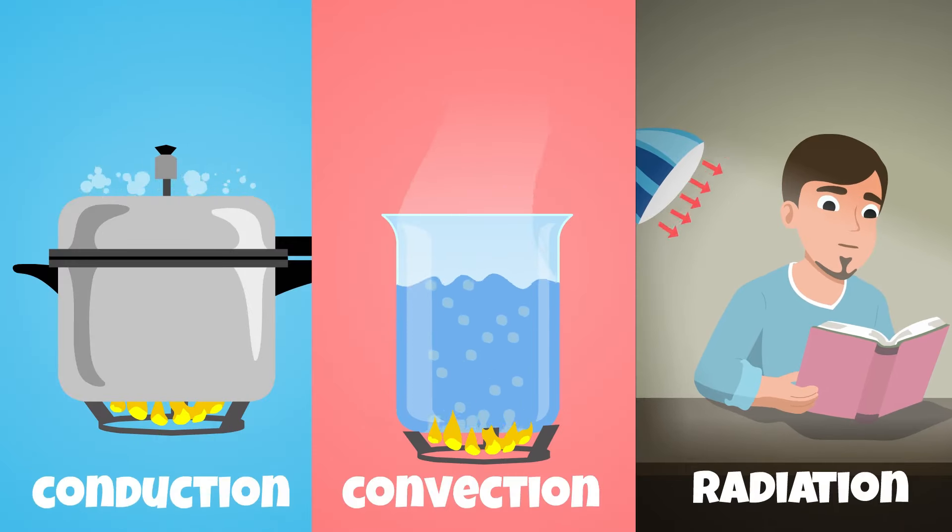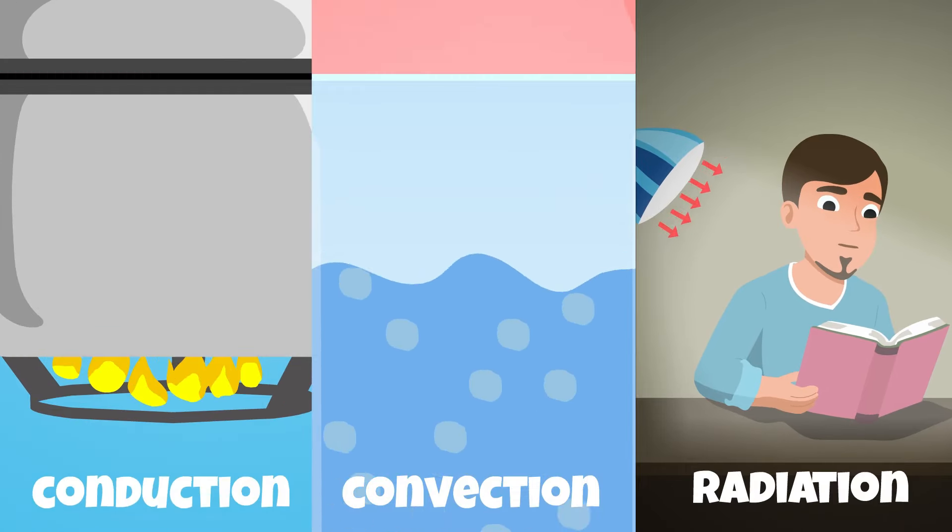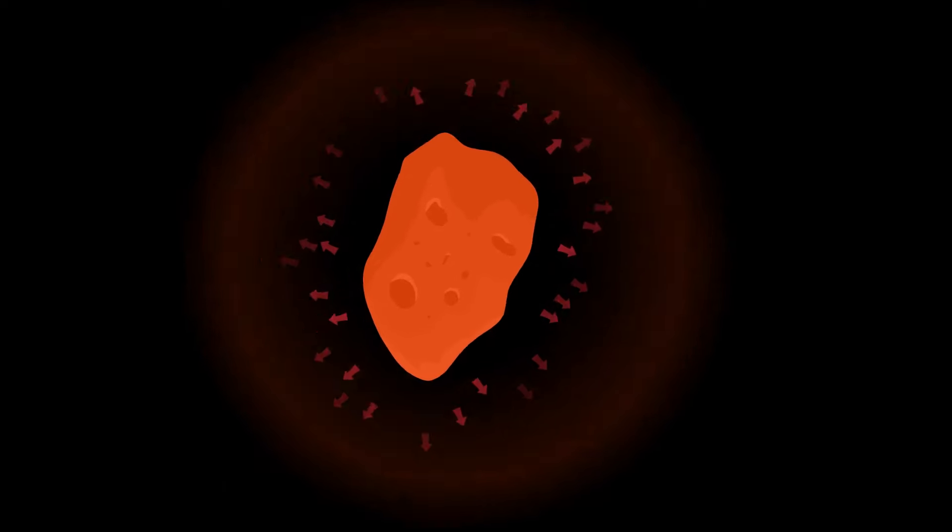unlike conduction and convection, both of which require matter to transfer heat. Everything in space, unless they are very close to a heat source like our sun, becomes cold because it constantly loses heat due to radiation.